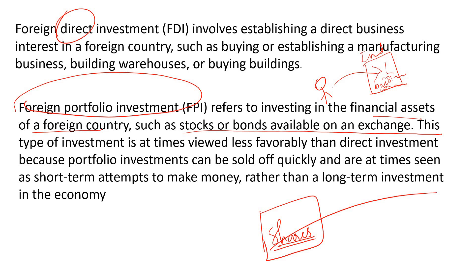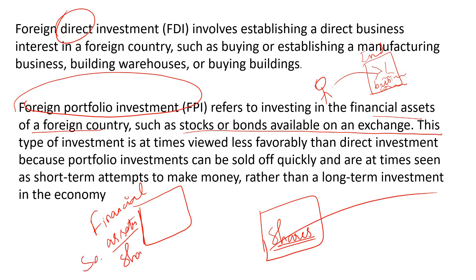To invest in financial markets, you invest in stocks and bonds. A financial market is where buying and selling of financial assets takes place. Financial assets include securities, shares, bonds, and debentures.